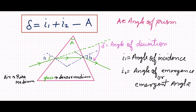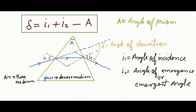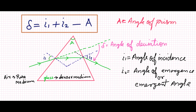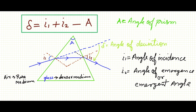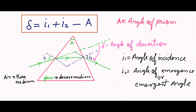Hello students. In this video I will illustrate the relationship between angle of deviation, angle of incidence (i1), emergent angle (i2), and angle of prism (A).